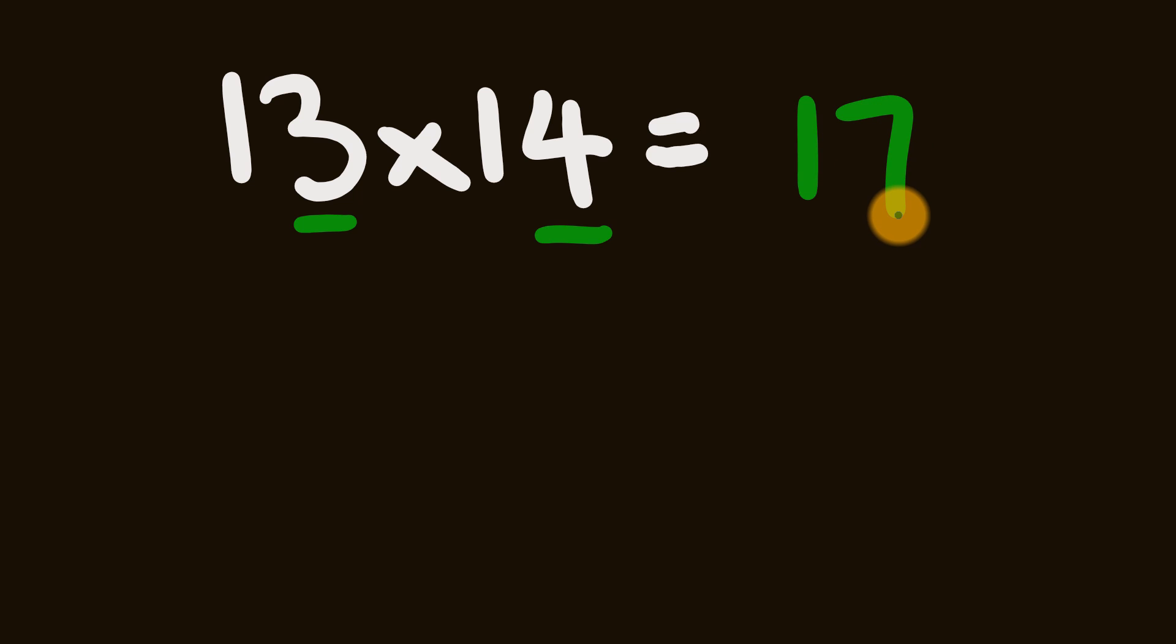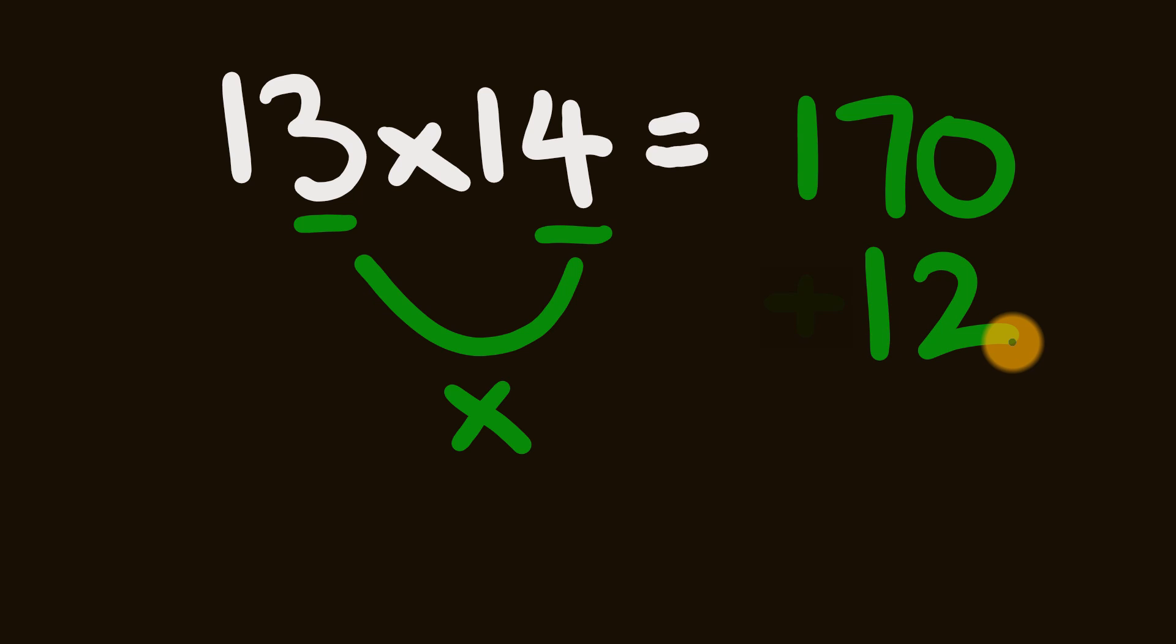The next step in this trick is you multiply this number by 10. As you can see these are tens numbers, we multiply by 10, so we end up with 170. Now the final step, what we do is we multiply 3 times 4. 3 times 4 is 12, and we add that on. So 170 plus 12 gives us our answer of 182.